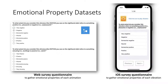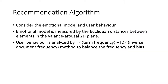Here are the web survey questionnaire on the left and the mobile-based survey questionnaire on the right. The recommendation system mainly considers the emotional model and user behaviors. The emotional model is measured by the Euclidean distance between elements in the Valence-Arousal 2D plane — for example, once a sticker is selected, all vibrations with lower Euclidean distance will be ranked first. For user behavior, we use the TF-IDF method popular in information retrieval: TF represents the frequency of previous selections, and IDF reduces bias toward overly common elements, increasing recommendation diversity. Every time a new element is selected, the order of all unselected elements is renewed.